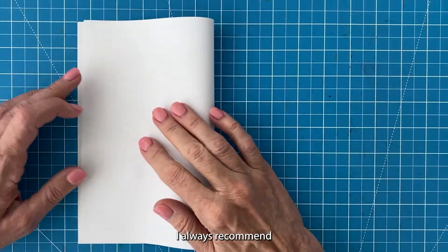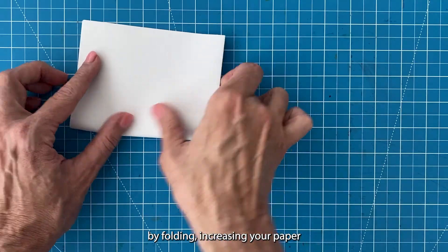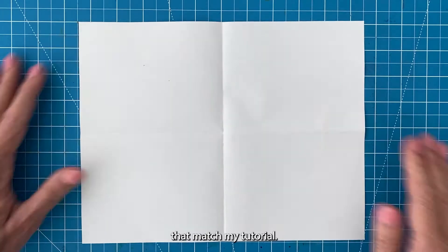Before you begin drawing, I always recommend making some guidelines on your paper first. By folding and creasing your paper in half in both directions, you'll have guidelines that match my tutorial.